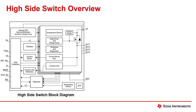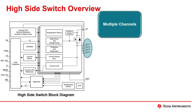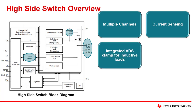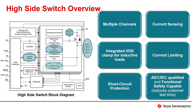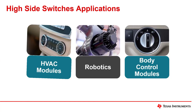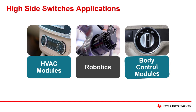Finally, we have high-side switches, which are switches that have adjustable current limits and are commonly used for output protection. They have a broad range of voltages from 6 to 80 volts and can cover currents up to 12 amps. High-side switches have multiple channels, current sensing, integrated VDS clamp for inductive loads, current limiting, short circuit protection, are AEC and IEC qualified, and are also functional safety capable to reduce customer testing time. They are commonly used for automotive and industrial equipment that require components compliant with AEC and IEC standards, such as HVAC modules, robotics, and body control modules.